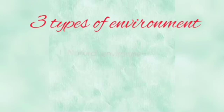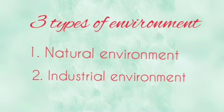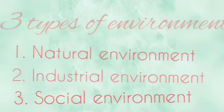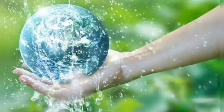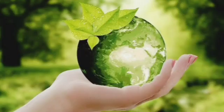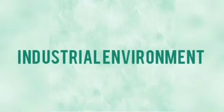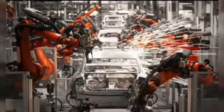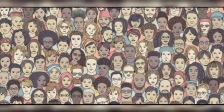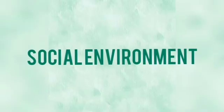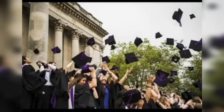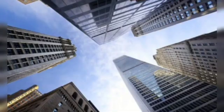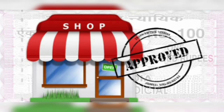There are three types of environment: natural environment, industrial environment, and social environment. The natural environment includes water, light, land, air, and all organisms that live in nature. The industrial environment consists of villages, factories, cities, and all humans. The social environment includes authorities, universities, schools, companies, and other establishments along with their output, legal, and communication processes.